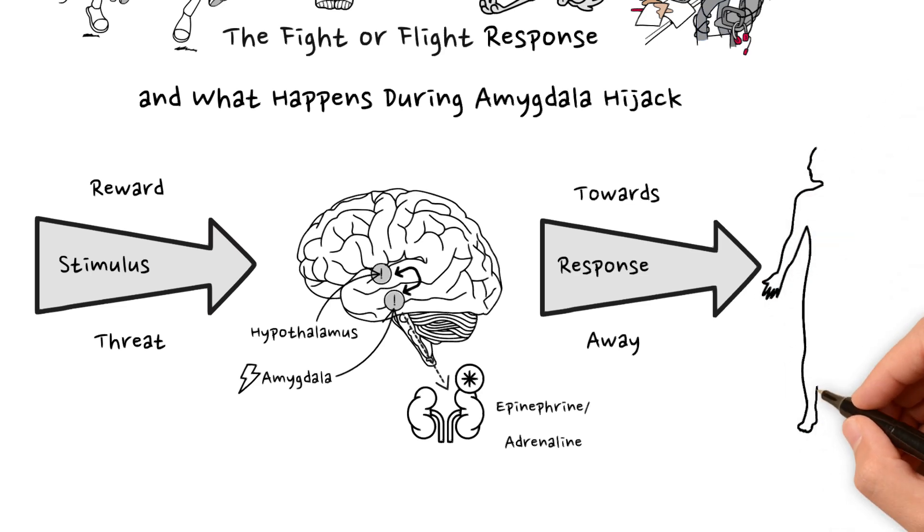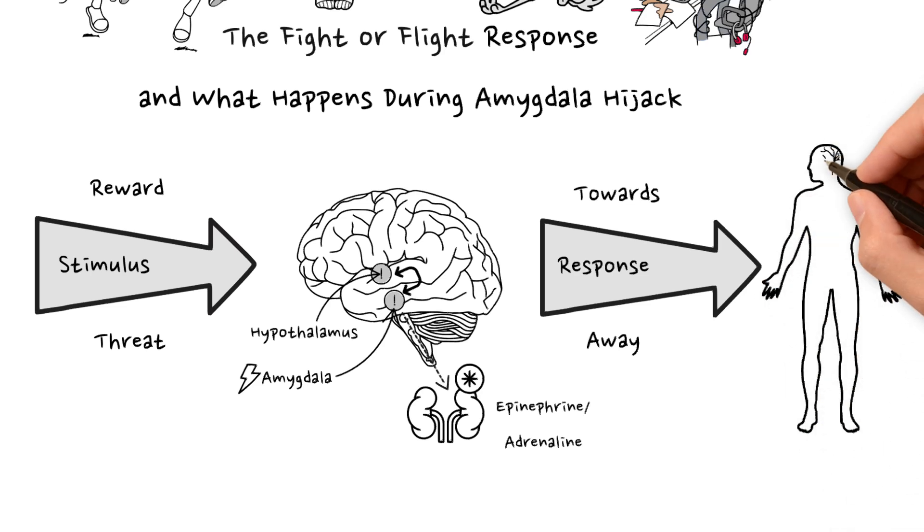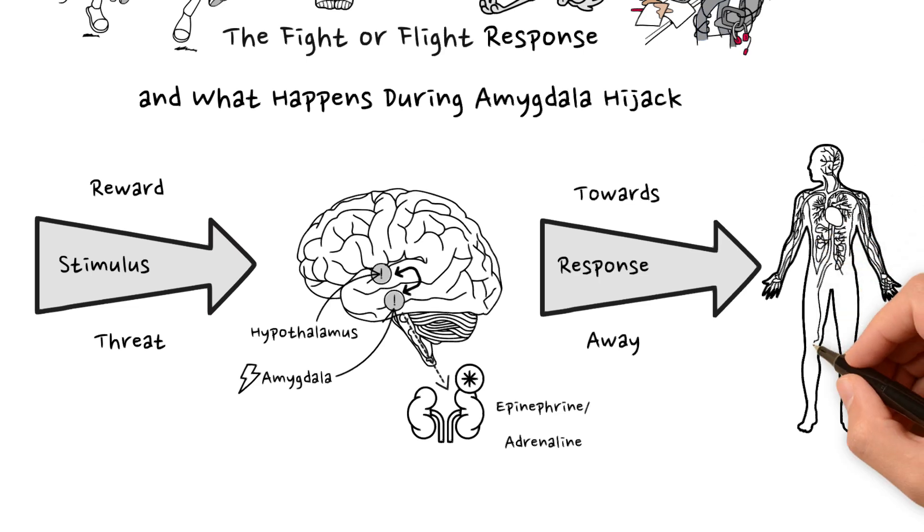This adrenaline prompts physical effects such as expanded airways, an increased pulse and heightened blood pressure. Sensors, such as sight and hearing, are sharpened and sweat glands are opened. The epinephrine also starts a release of glucose and other nutrients into the bloodstream.